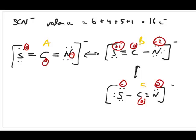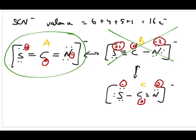Calculating formal charges: structure A has 0, 0, and negative 1 on nitrogen. Structure B has plus 1, 0, and negative 2. Structure C has negative 1 on sulfur and 0, 0. Going back to the rules, structure B is clearly the worst — it has formal charges on two atoms, while A and C each have formal charges on only one atom. Comparing A and C: structure A is better because its negative formal charge is on nitrogen, which is more electronegative than sulfur. So based on rule three, we pick structure A as our best structure.